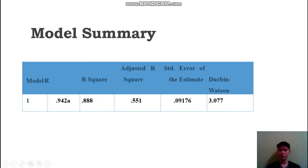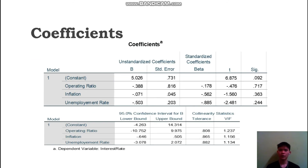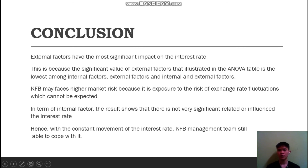For the model summary, the adjusted R-square is the key metric — the higher, the better. In order to increase the adjusted R-square value, I would need to increase the number of independent variables or the number of observations. For the coefficients table, it tells us which variable has the most influence on the dependent variable by looking at the highest t-value. Unemployment rate has the highest t-value, meaning it has the highest influence on interest rate. As a conclusion, external factors have the most significant impact on the interest rate, the dependent variable.